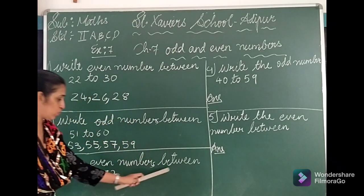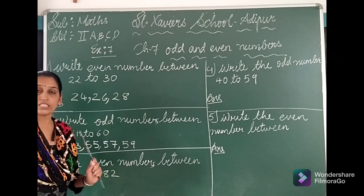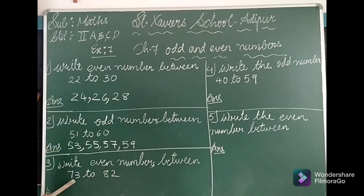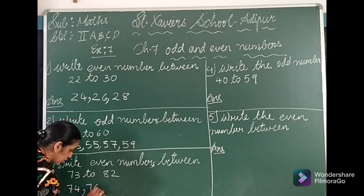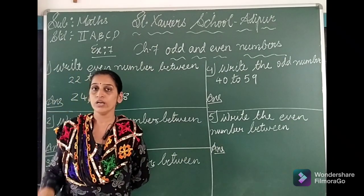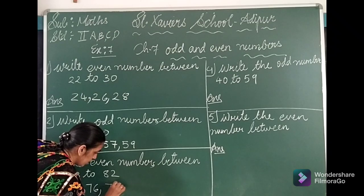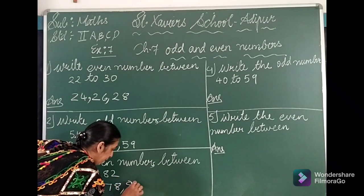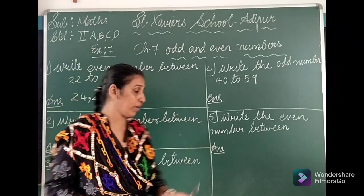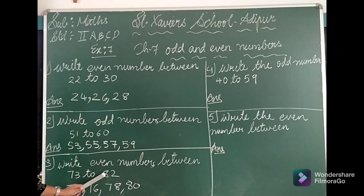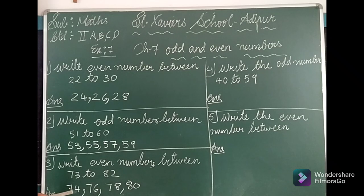Next: write the even numbers between 73 to 82. 73 is odd. 74 is even — we write 74. 75 is odd. We write 76 because it is even. 77 is odd. We write 78. 79 is odd. We write 80. 81 is odd. We will not write 82 because 82 is the boundary number. So our even numbers between 73 to 82 are: 74, 76, 78 and 80.